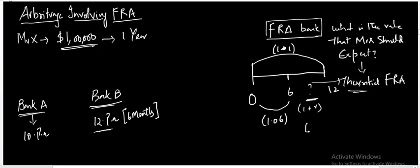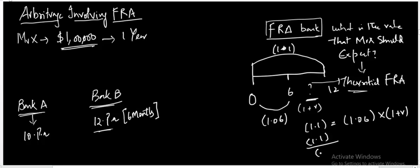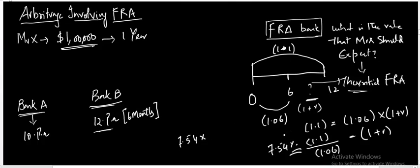To calculate the theoretical FRA, let the rate be R. Then: 1.1 = 1.06 × (1 + R). Dividing 1.1 by 1.06 gives (1 + R). This yields a theoretical FRA of 7.54% for the 6-month period. To annualize it, multiply by 12 and divide by 6 to get the full-year theoretical FRA.